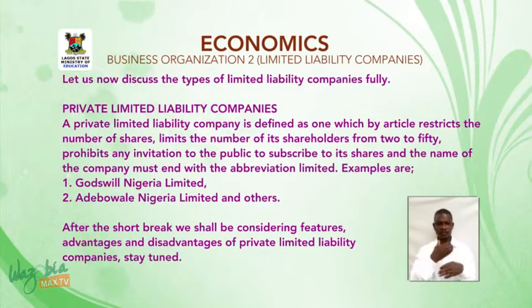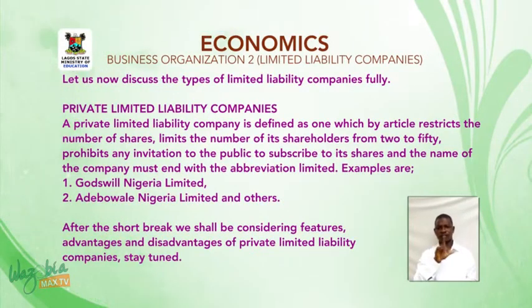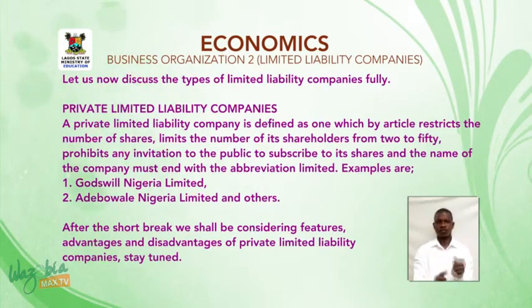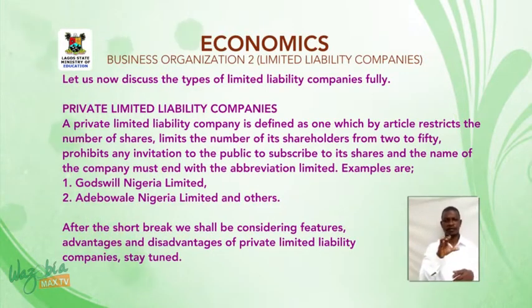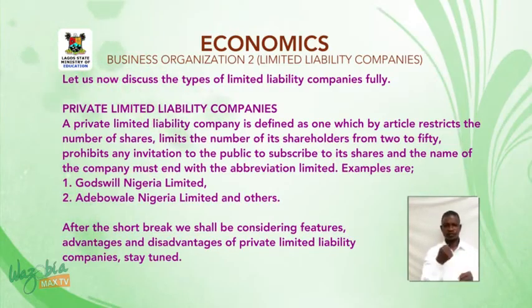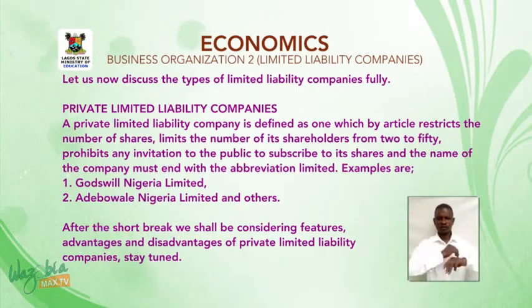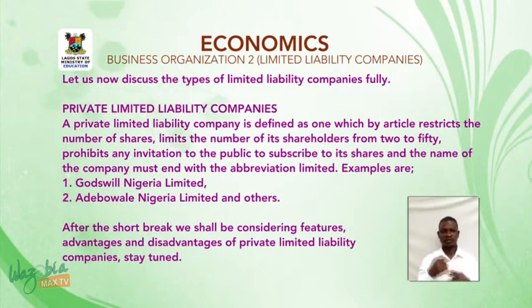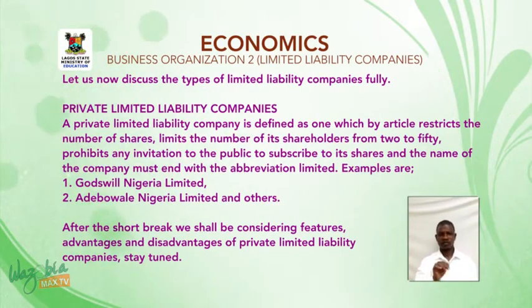1. Private limited liability companies. A private limited liability company is defined as one which, by its articles, restricts the transfer of shares, limits the number of shareholders from 2 to 50, prohibits any invitation to the public to subscribe to its shares, and the name of the company must end with the abbreviation 'Limited'.